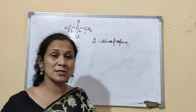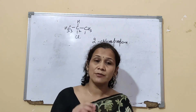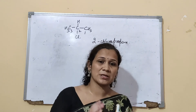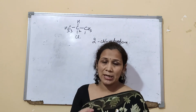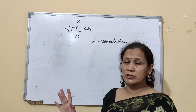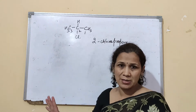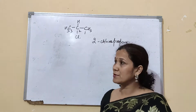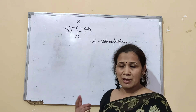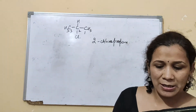An important point: for halogens, we never write them as a suffix — we always write the halogen name as a prefix. So halogen names always come as prefix in IUPAC nomenclature. Practice a few nomenclature questions to build confidence.